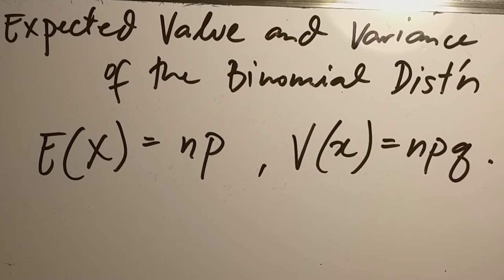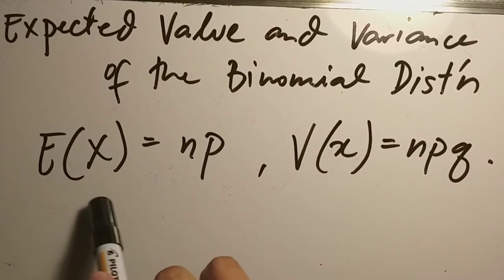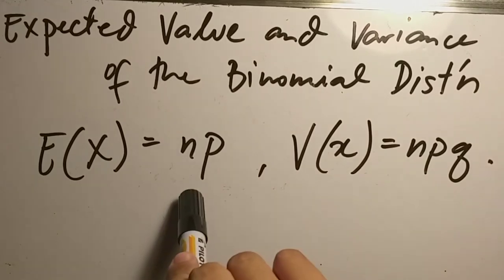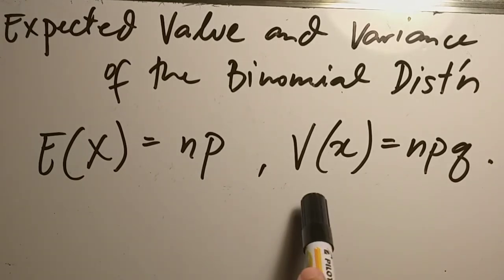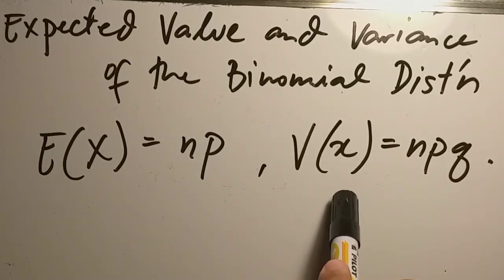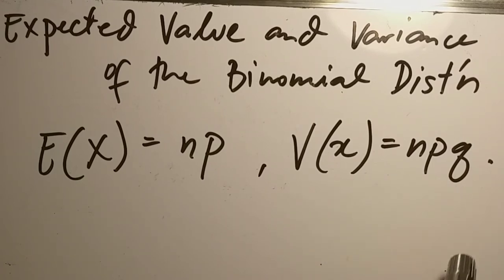The expected value of the binomial distribution is E(X) = np, and the variance of the binomial distribution is Var(X) = npq.